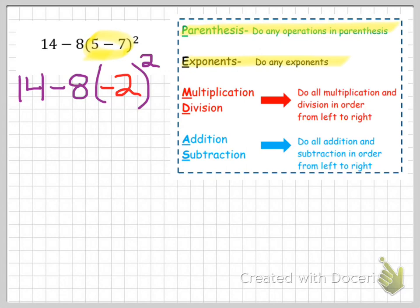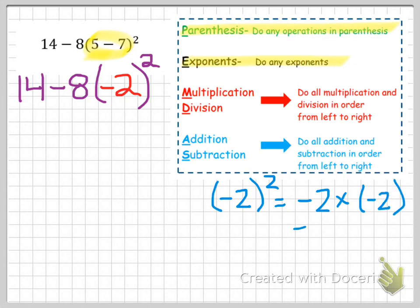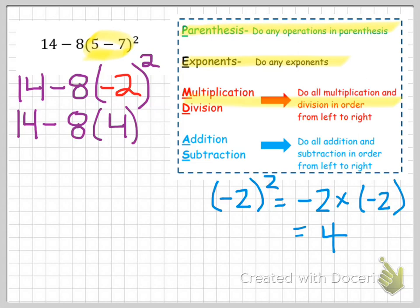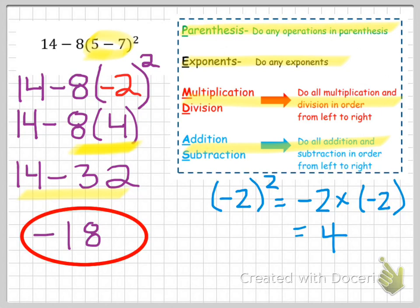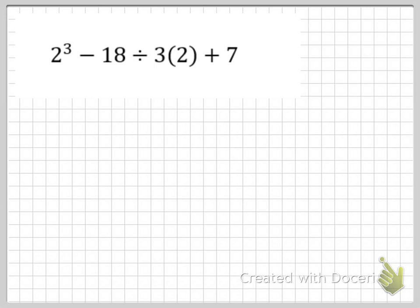I see that I have negative 2 being squared. Working that out separately: negative 2 squared is negative 2 times negative 2, which equals positive 4. Going back to my problem, I now have 14 minus 8 times 4. Those parentheses now represent multiplication, so I do 8 times 4, which is 32, giving me 14 minus 32. Moving to addition and subtraction, the answer is negative 18.